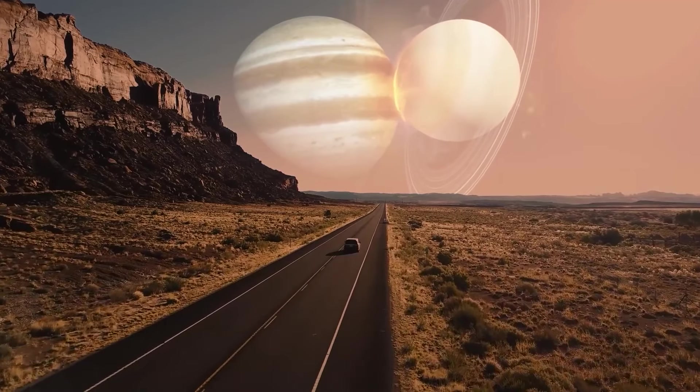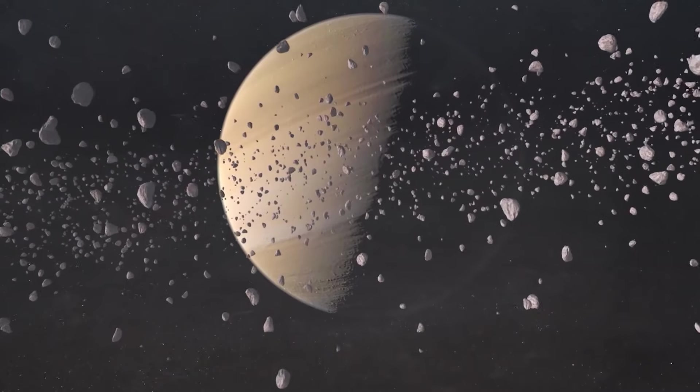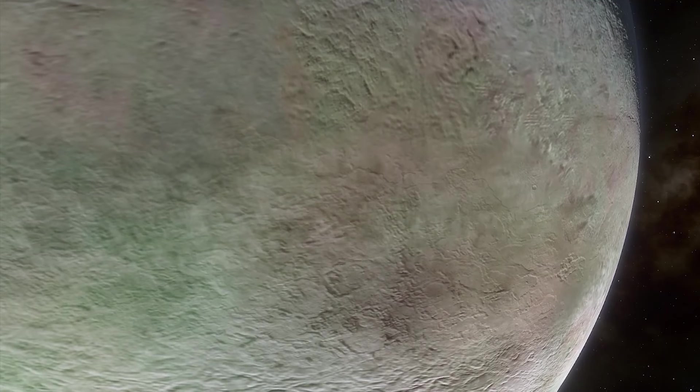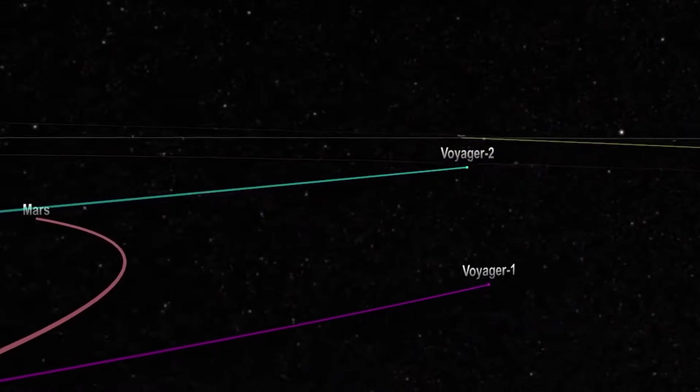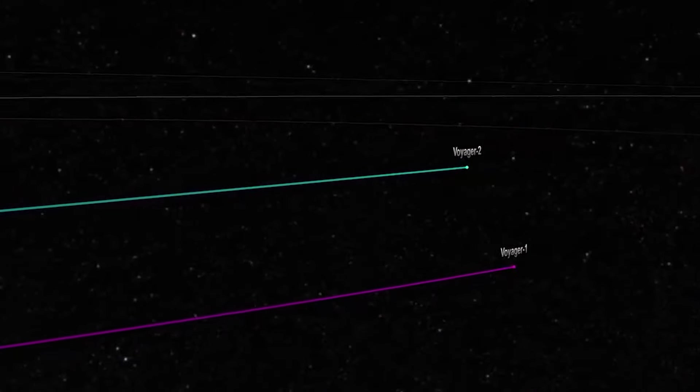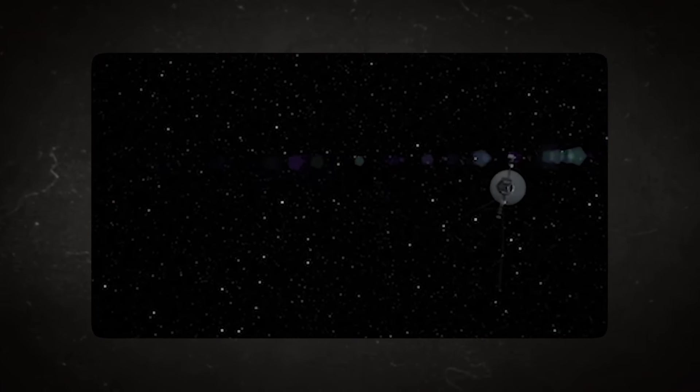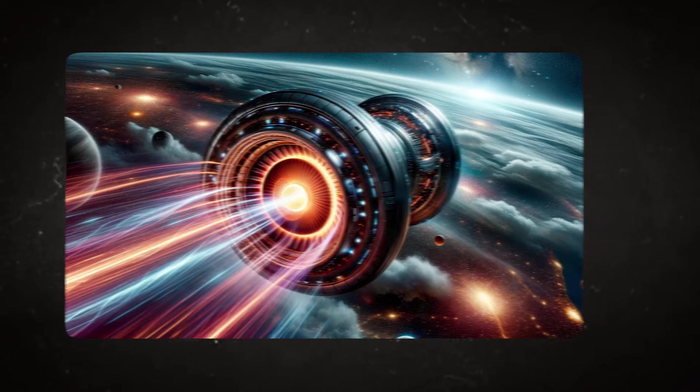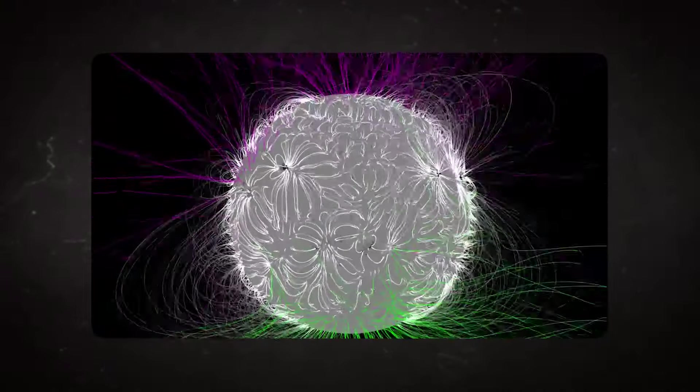Moving on from Jupiter to Saturn, Voyager 1 discovered new moons and provided close-up images of Saturn's rings, revealing their complex structure with gaps and divisions. It also examined Saturn's largest moon, Titan, identifying it as the only moon in the solar system with a dense atmosphere. It also observed and studied Saturn's magnetosphere and auroras. From there on, it moved through space until 2012, when it became the first human-made object to enter interstellar space, crossing the boundary known as the heliopause. Today, it continues to transmit data on cosmic rays and magnetic fields in interstellar space, providing insights into the region beyond the influence of the Sun's magnetic field.